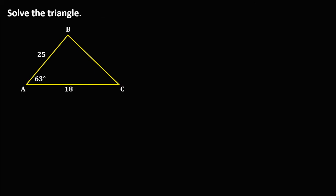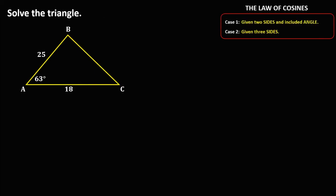We have this given — solve for the triangle. Since this given satisfies Case 1 for the law of cosines, because we have two sides and the included angle, therefore we can solve this triangle using the law of cosines.